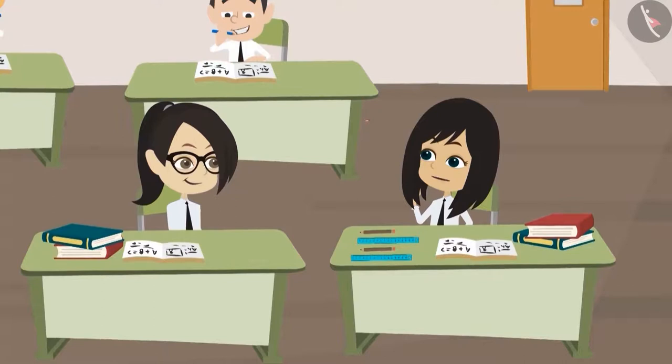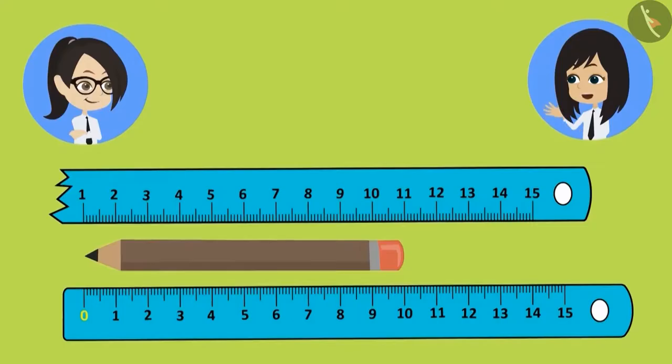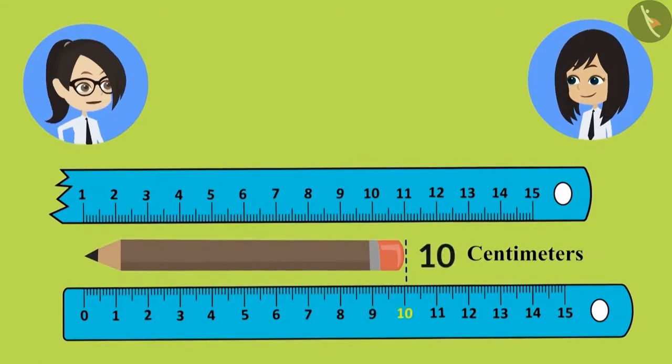This means whenever we measure using a broken scale, we will still start from 0. Yes, let's measure now: 0, 1, 2, 3, 4, 5, 6, 7, 8, 9 and 10. 10 centimeters. Now the measurement is correct.